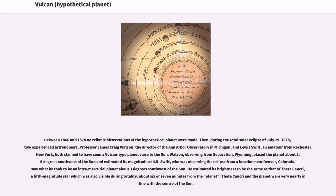He estimated its brightness to be the same as that of Theta Cancri, a fifth magnitude star which was also visible during totality, about 6 or 7 minutes from the planet. Theta Cancri and the planet were very nearly in line with the center of the Sun.